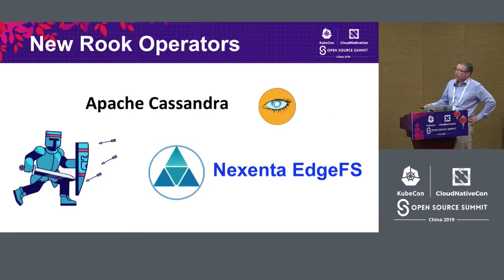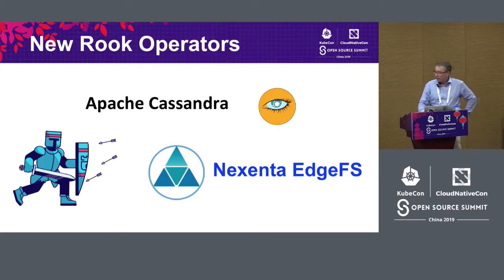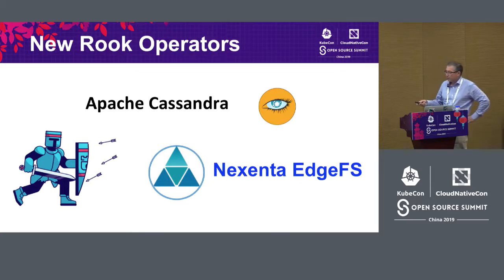What's in 1.0? We just recently released 1.0, announced at the previous KubeCon. 1.0 has two new operators: Apache Cassandra and Nixenta EdgeFS. We're going to be talking more about EdgeFS today, and we'll discuss multi-home networking as an example of usage.